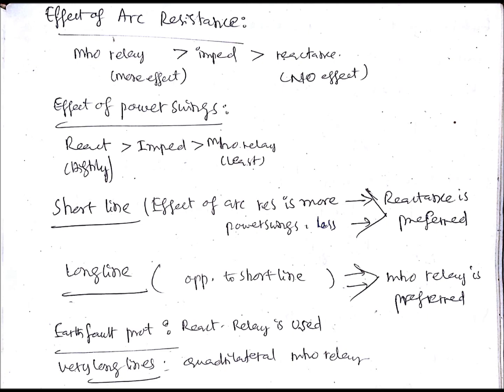For a long line, the mho relay will be preferred because the resistance is negligible here, so we can go with the mho relay. At the same time, you need to consider power swings — the power swings are more in case of a long line. By observing both factors, the mho relay is preferred for long lines.